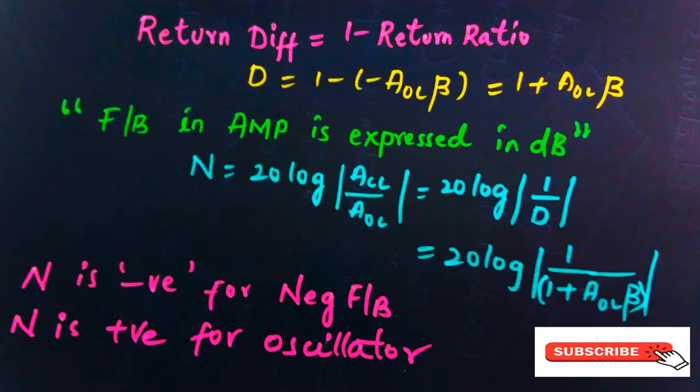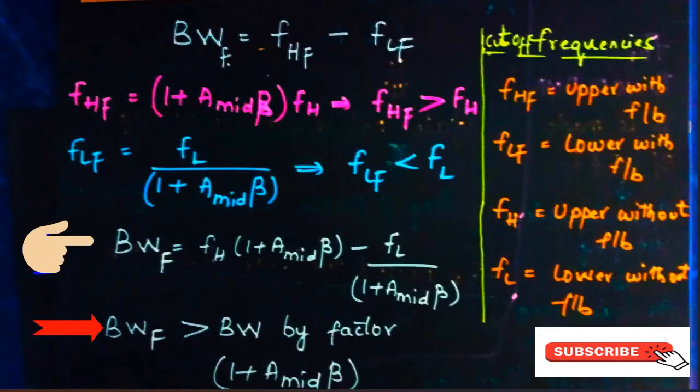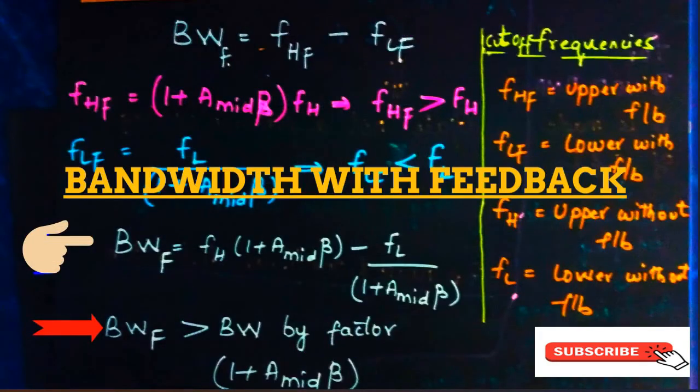The feedback introduced in the amplifier is always expressed in decibels, represented by N. N is positive for positive feedback and negative for negative feedback.